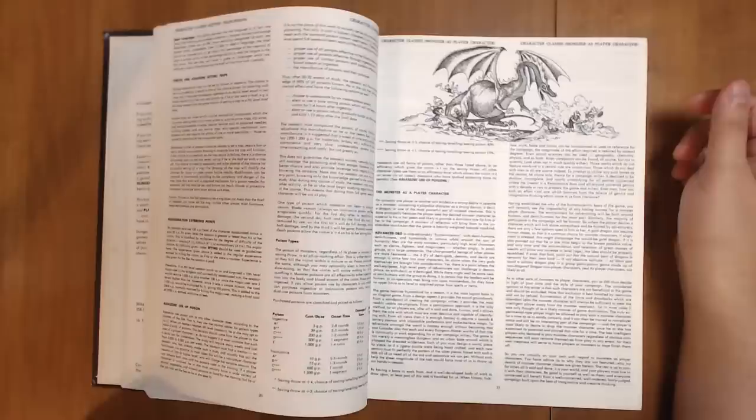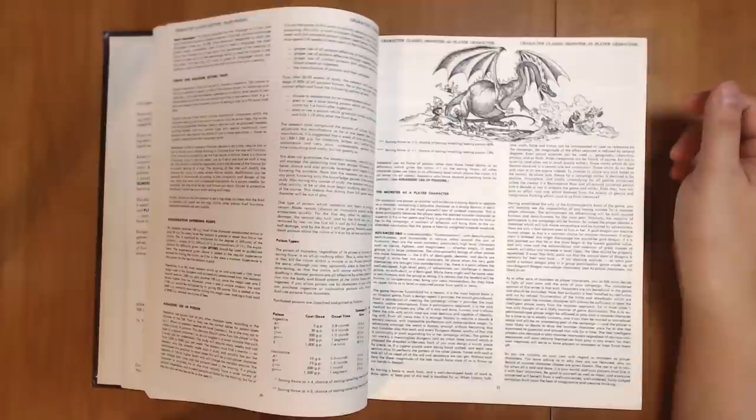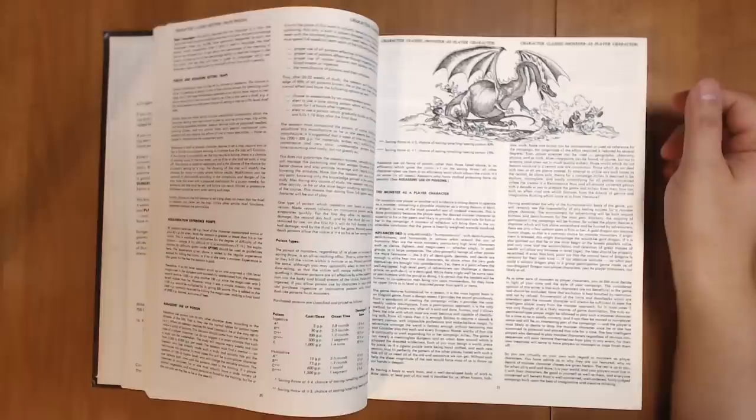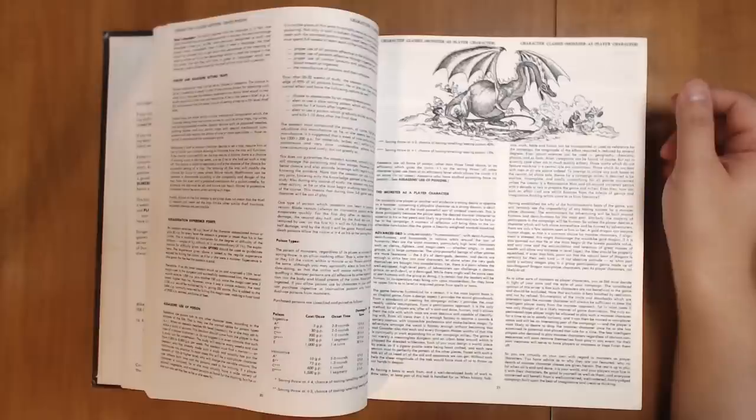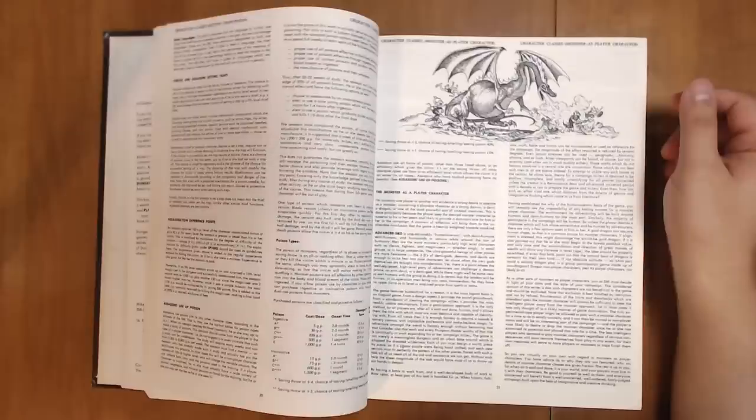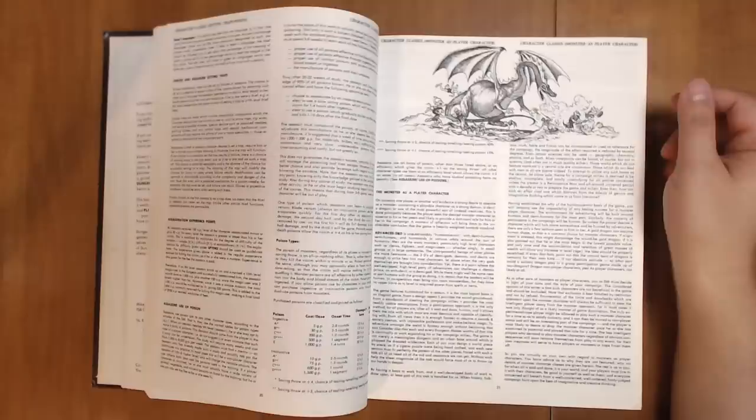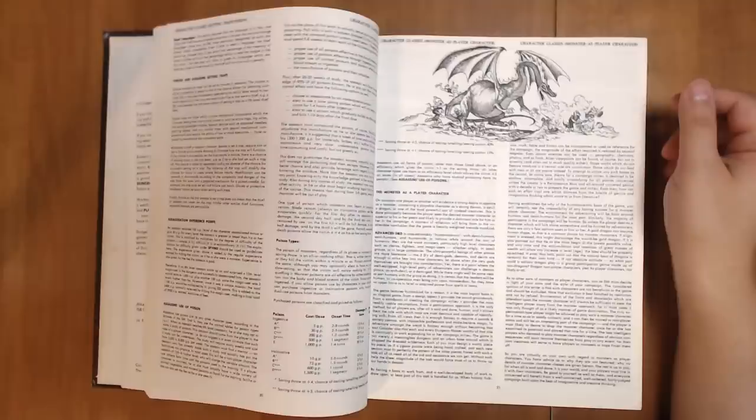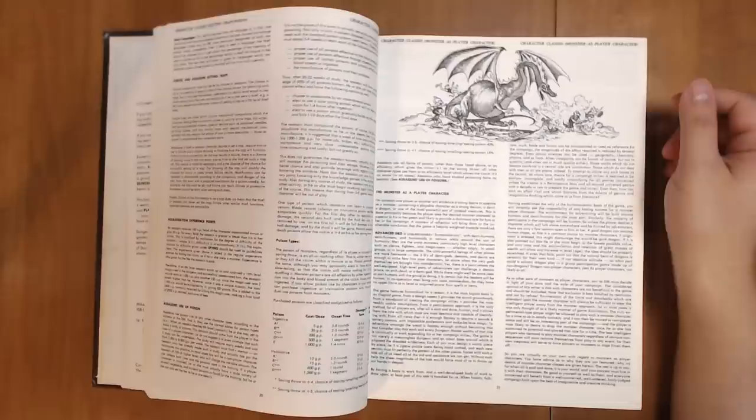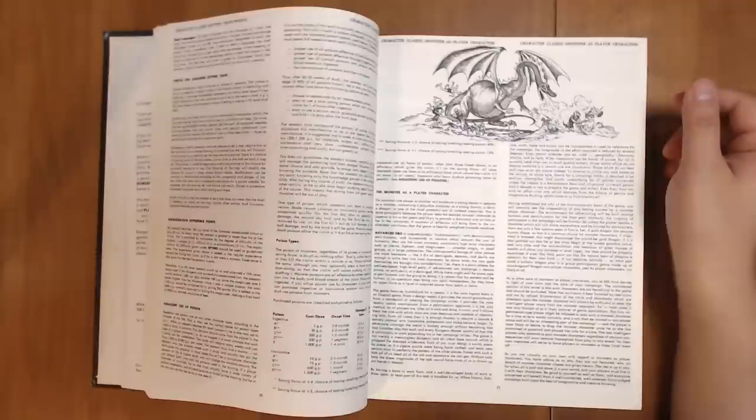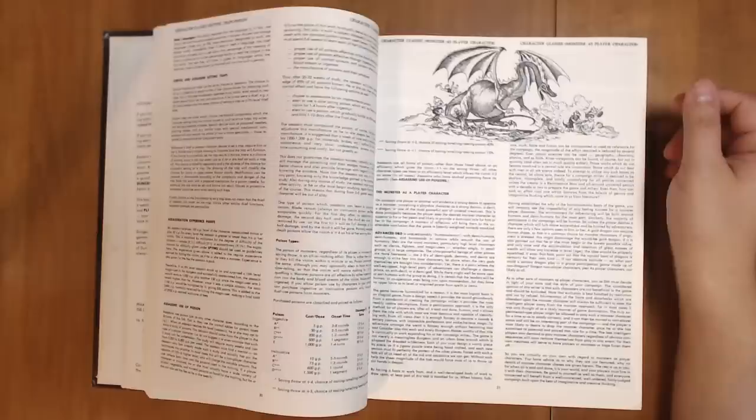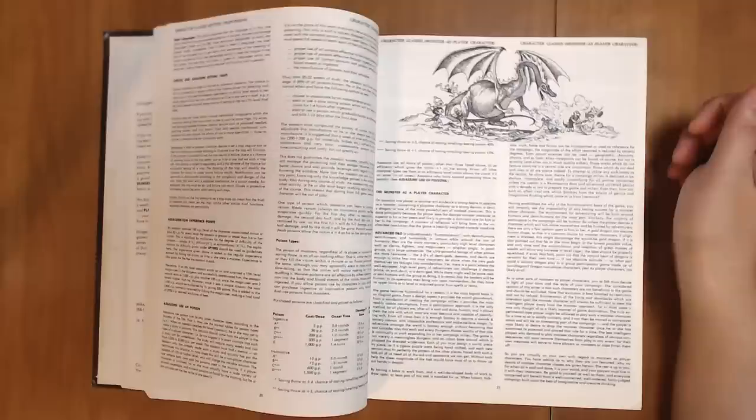Having established the why of the humanocentric basis of the game, you will certainly see the impossibility of any lasting success for a monster player character. The environment for adventuring will be built around humans and demi-humans for the most part. So unless the player desires a character which will lurk alone somewhere and be hunted by adventurers, there are only a few options open to him or her. A gold dragon can assume human shape, so that is a common choice for monster characters. If alignment is stressed, this might discourage the would-be gold dragon. If it is also pointed out that he or she must begin at the lowest possible value, and only time and the accumulation and retention of great masses of wealth will allow any increase in level, the idea should be properly squelched.